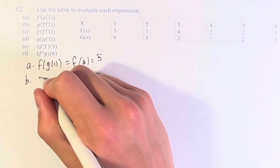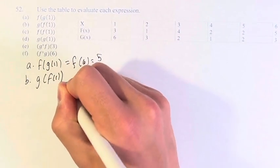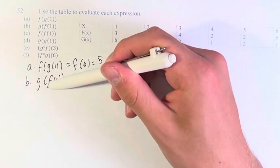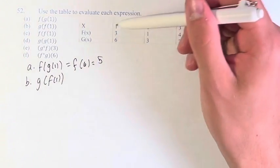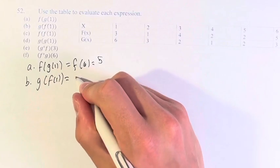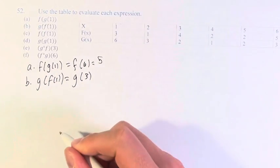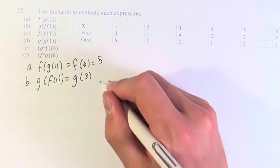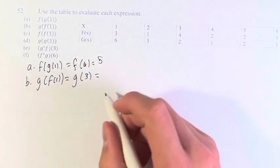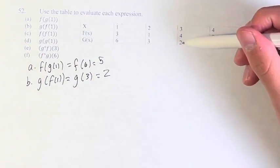And now we continue with g of f of 1. This is the reverse — we start with f of 1, which we can find is 3. And therefore this is g of 3.